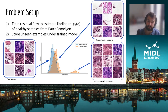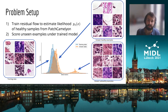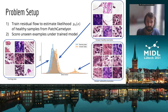Once we have trained the residual flow on the healthy training dataset — you can see some examples in the box on the left — we calculate the likelihood of unseen examples that can either be healthy or unhealthy. There are some examples of both cases on the right side of the slide. We would hope to see that the likelihood of healthy examples will be closer to that of training examples, whereas that of unhealthy samples should be different. Ideally, the negative log likelihood of the healthy samples should be lower than that of the unhealthy examples, as this is what the model is trained to do.